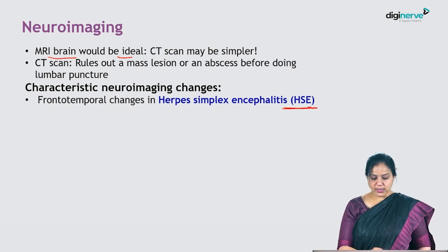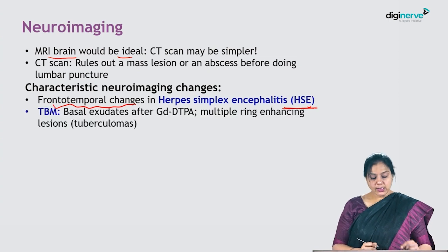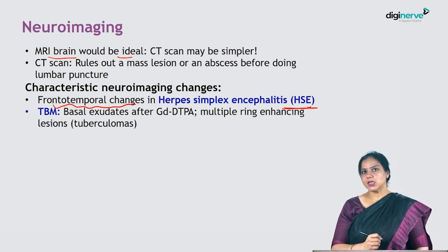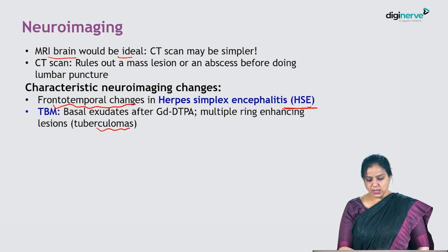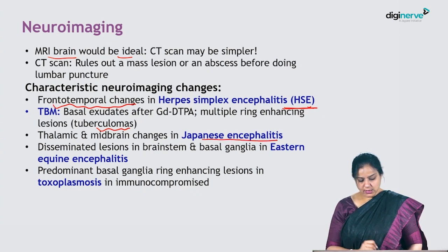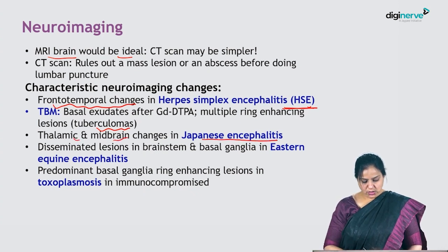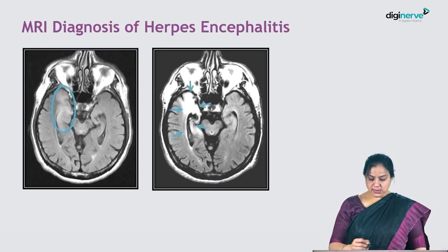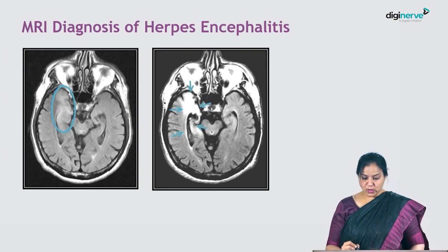Characteristic neuroimaging changes: in herpes simplex encephalitis there may be frontotemporal changes. In TBM, basal exudates on contrast CT or MRI, and ring-enhancing lesions called tuberculomas. In Japanese encephalitis, thalamic and midbrain changes. In toxoplasmosis, lesions in the basal ganglia.